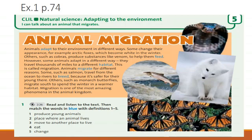Animals migrate for different reasons. Some, such as salmon, travel from the ocean to rivers to breed because it's safer for their young there. Others, such as monarch butterflies, migrate south to spend the winter in a warmer habitat. Migration is one of the most amazing phenomena in the animal kingdom.